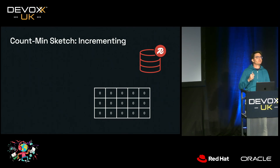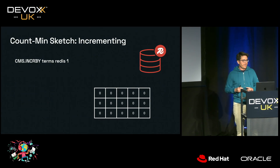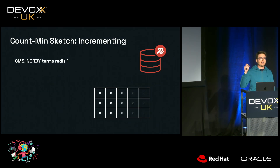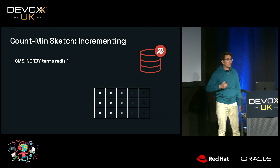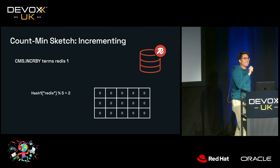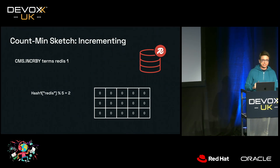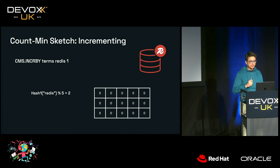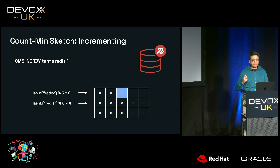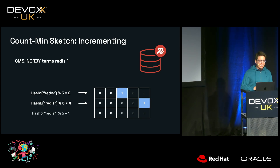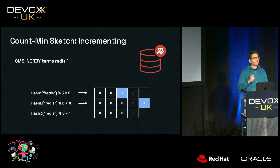Let's see what happens when you try to increment a term within this CMS. If you issue the command CMS.INCRBY, the name of the CMS (which is 'terms'), the element you want to count ('Redis'), and the number of times — Redis will run a different hashing function for each row, but always the same hashing functions. For the first row it returned 2, so we increment the counter at column 2. For the second it returned 4, incrementing column 4 of row 2. For the last, it increments column 2 of row 3.